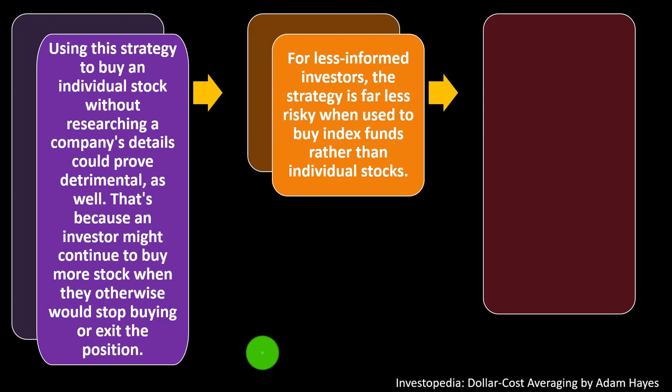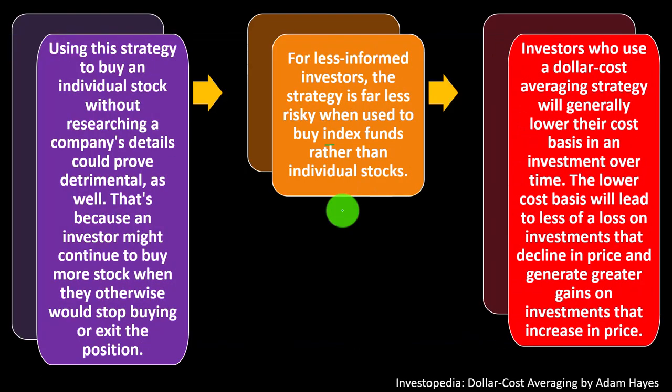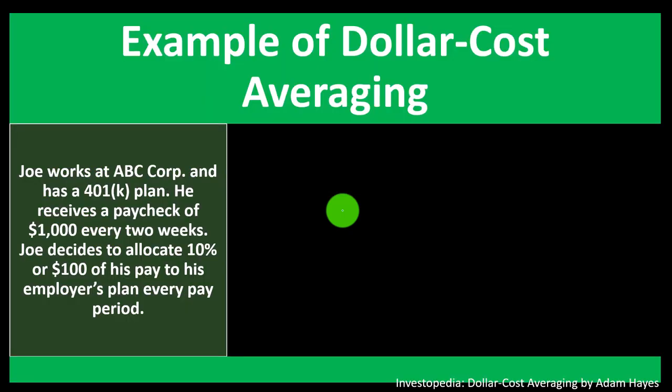For less informed investors, the strategy is far less risky when used to buy index funds rather than individual stocks. Notice that if you had a 401k plan invested just in the company you work for, that's a little risky because your stock is in one company. What you usually want when using a strategy like this is a mutual fund with a diverse portfolio, or even an index fund, which can lower the costs of fund management since you're betting on the market as a whole. Investors who use a dollar cost averaging strategy will generally lower their cost basis in an investment over time, leading to less loss on declining investments and greater gains on increasing ones.